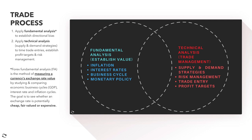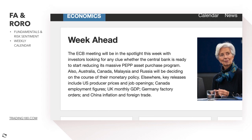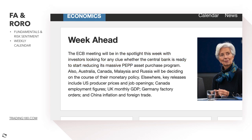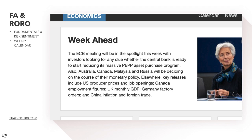Let's get into the week ahead. The European Central Bank meeting will be in the spotlight this week, with investors looking for any clue whether the central bank is ready to start reducing its massive PEPP asset purchase program. The PEPP program allows the ECB to purchase different types of assets in financial markets; by doing this, asset prices go up, market interest rates go down, and this supports the economy by making borrowing cheaper for people, businesses, and governments. Essentially, the PEPP is backstopping the economy.